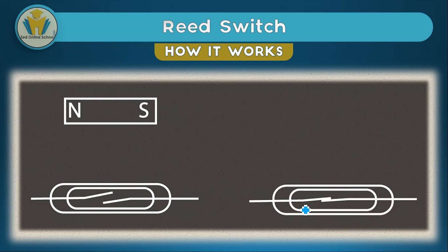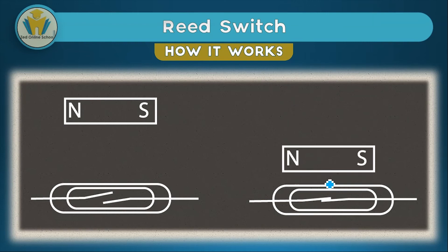When we have a closed reed switch — you can see the difference: this one is open, this one is closed — it means a magnet is very close to the reed switch. This ability to close and open due to a magnetic force makes the reed switch useful in circuits. For example, in alarm systems a reed switch can be used to switch on an alarm if a door is opened.